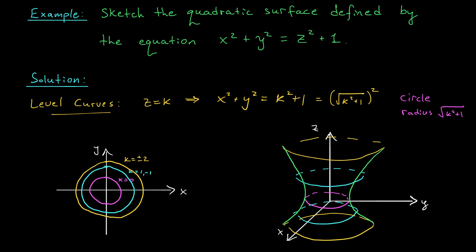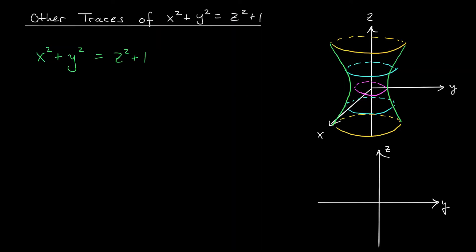Let's check out some of our other traces to make sure that we've sketched this thing correctly. Let's take a look at some of the vertical traces of our surface and see if we can identify them in our picture. We get the vertical traces by slicing in the x-axis or the y-axis. So I'm going to go ahead and slice in the x-axis.